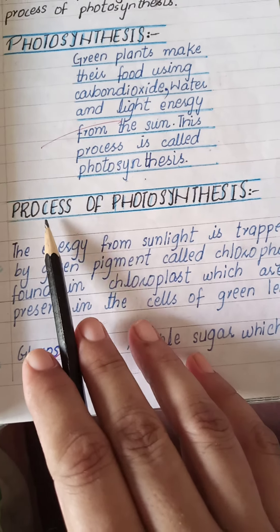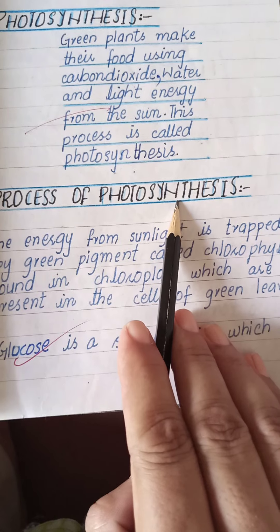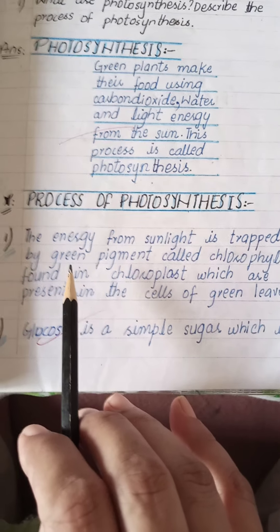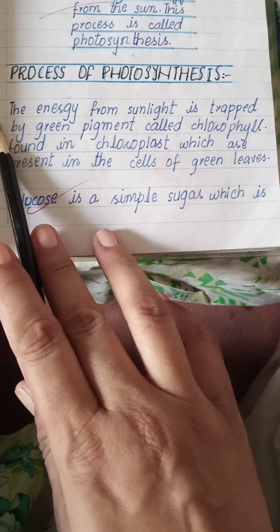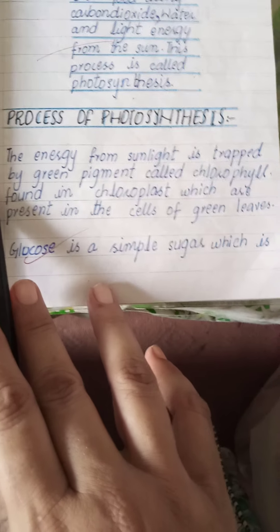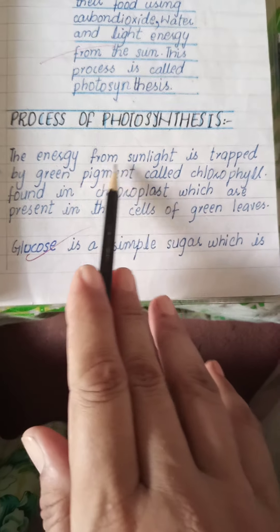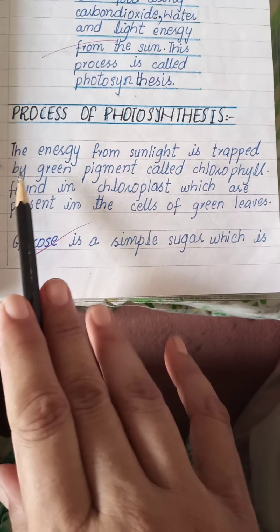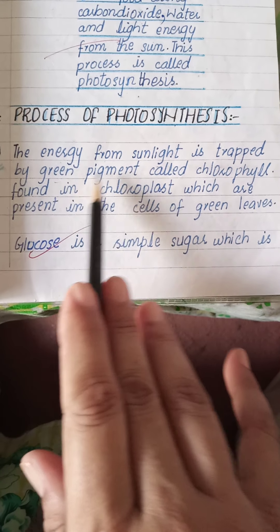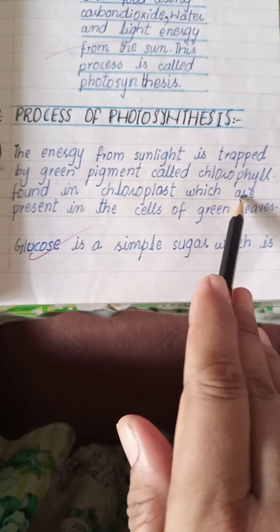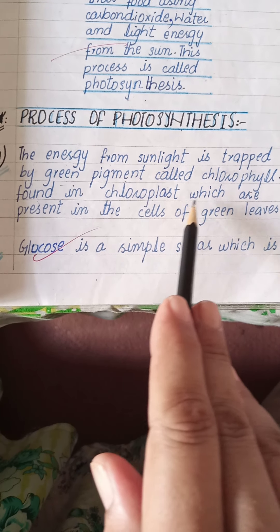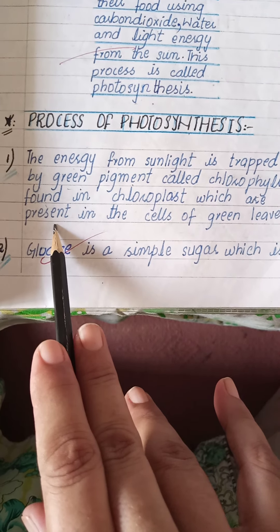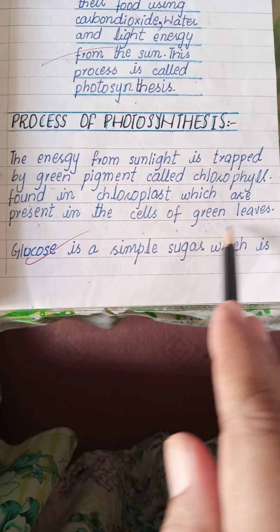Give the heading of process of photosynthesis. Point number one: the energy from sunlight is trapped by the green pigment called chlorophyll, found in chloroplasts which are present in the cells of green leaves.